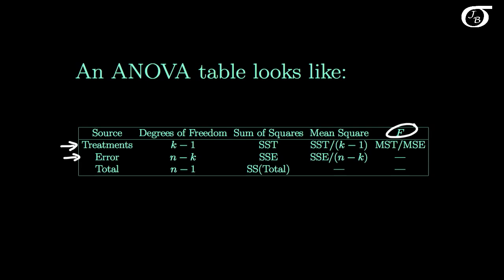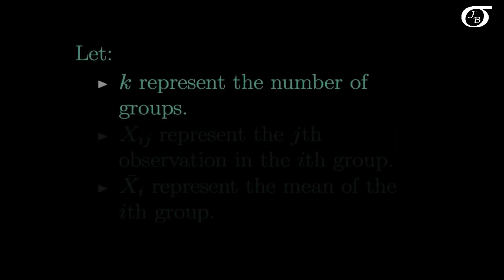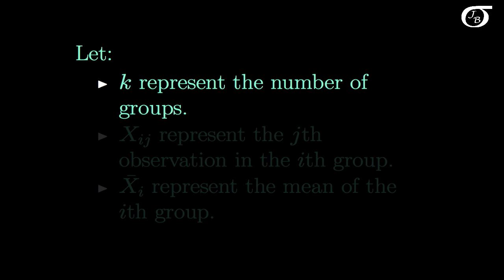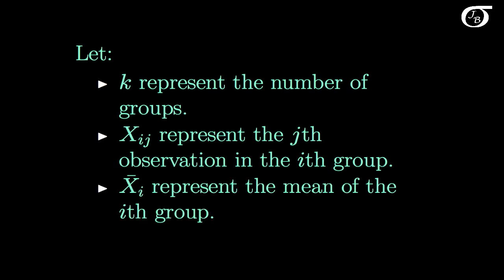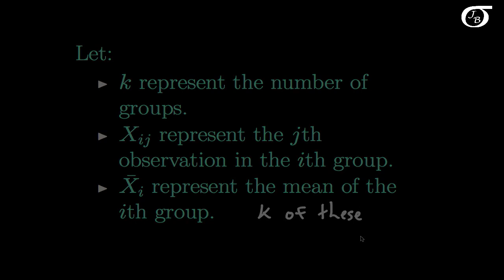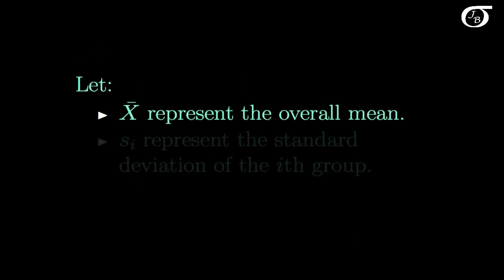Let's take a look at the meaning of these different terms. We're going to let k represent the number of groups. X sub ij represents the jth observation in the i-th group. X bar sub i represents the mean of the i-th group, and there's going to be k of these because we had k groups. X bar with no subscript represents the overall mean, sometimes called the grand mean. This is simply the mean of all observations — if we took all of our observations, added them up and divided by how many we had, we'd get our x bar.